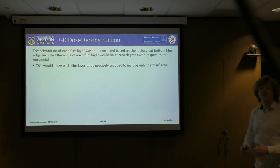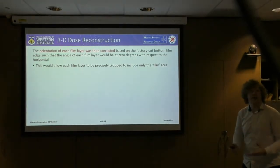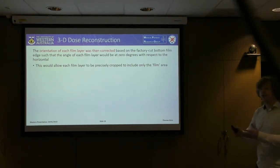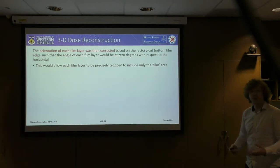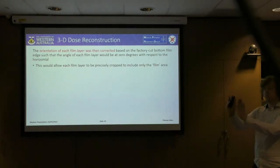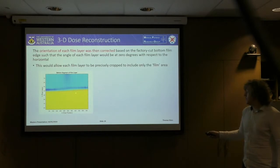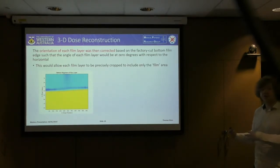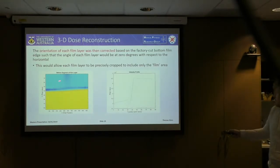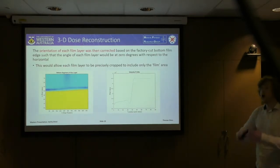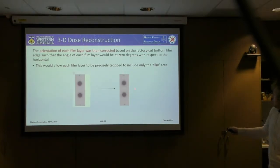When scanning the films, it's not reasonable to assume every film can be scanned in the exact same orientation, yet precise cropping to include only the film area is essential. Consequently, as each film layer was read into MATLAB, we wrote an algorithm to correct the angle so each film was normalised to lie at zero degrees with respect to horizontal. This was achieved by taking a rough crop of the bottom factory edge for each film layer, taking a vertical intensity profile for every column, finding the central point, and plotting a line through all such points to determine the angle — then correcting and cropping the image.